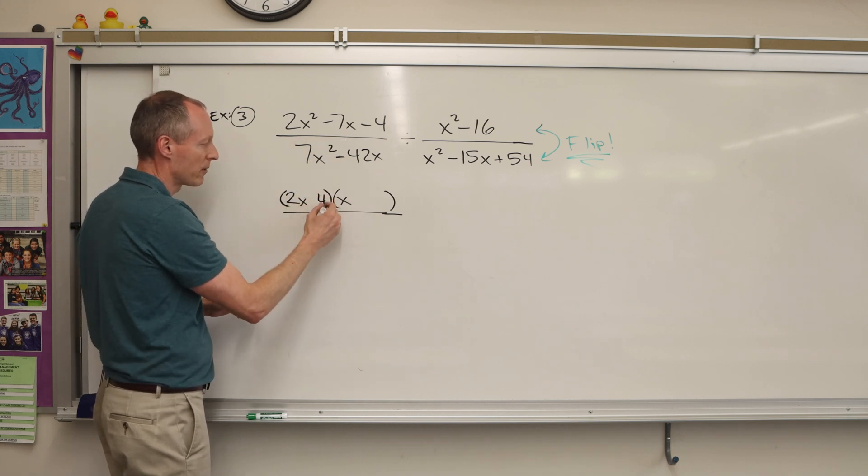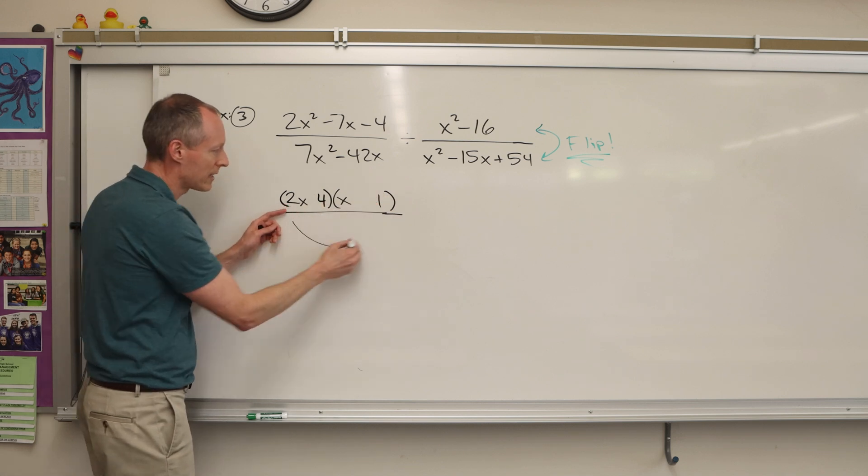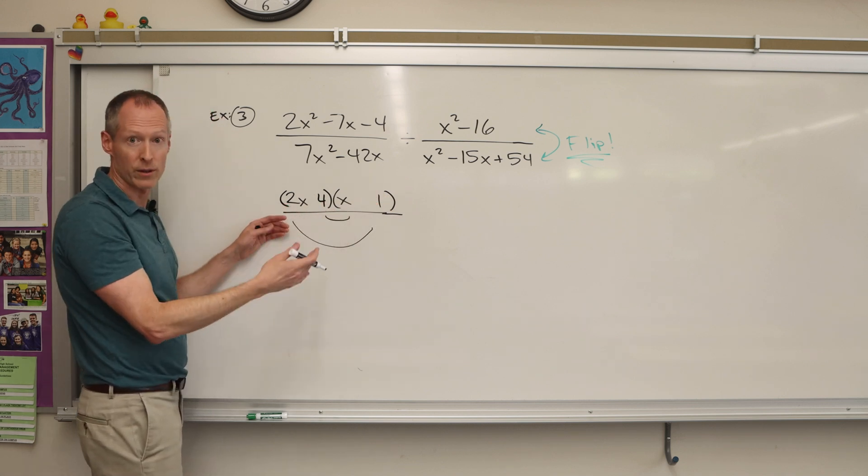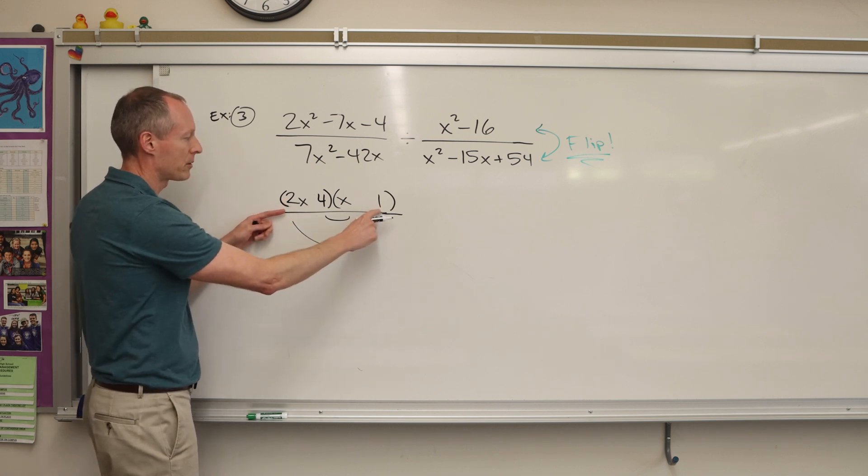first, outer, inner, last. So you check the outer terms. That would be two x. The inner terms are four x. Those are not going to combine to give a seven. So that's not correct.